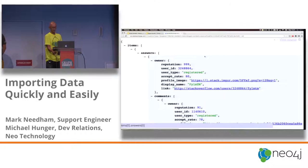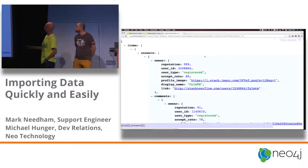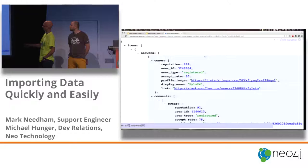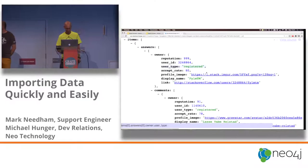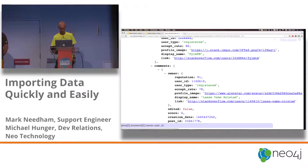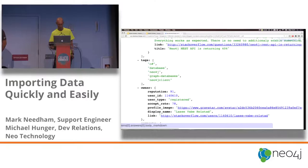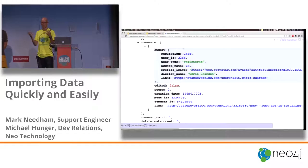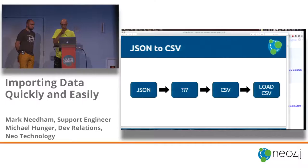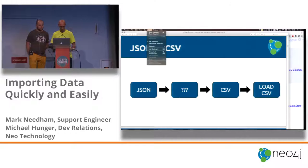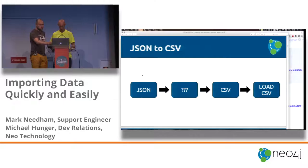We'll start with the API. This is what you get if you call the Stack Exchange API. You get a JSON array-type structure — you've got items and arrays of answers with a load of other metadata. You've got an owner with a user ID, you can see if they're registered, they've got comments, then the question, and you can tag stuff. There are some quite interesting, potentially interesting insights we can get from putting data like this into a graph.